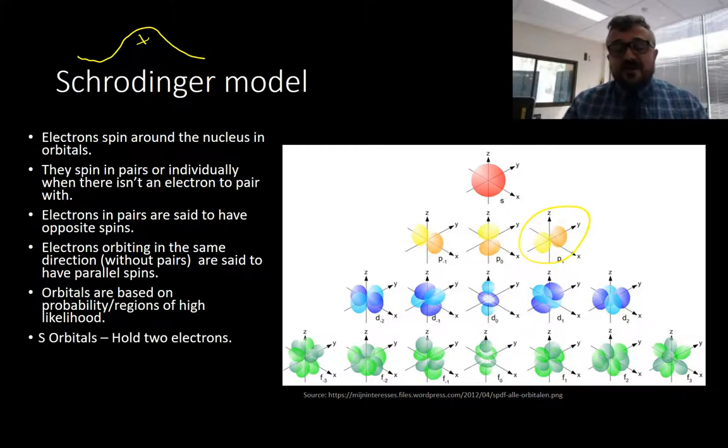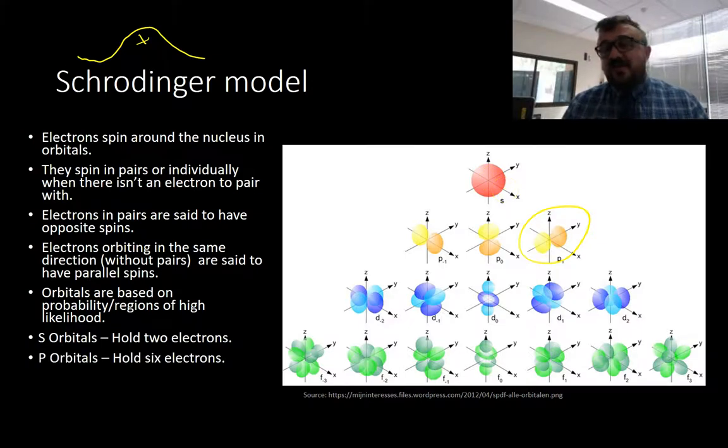S orbitals have two electrons. P orbitals hold six, but what this means is each of these orbitals in the P orbital energy level holds two electrons each. There'll be two here moving in different directions, one there moving in different directions, and one there moving in different directions. All up, there's going to be six.